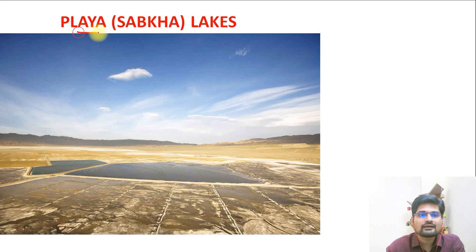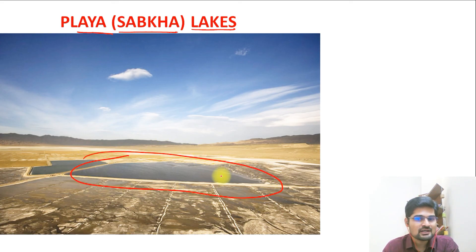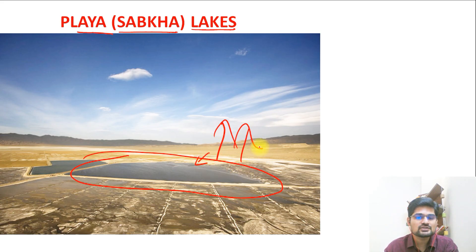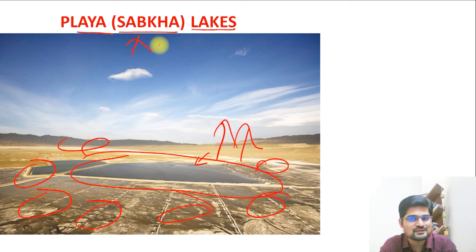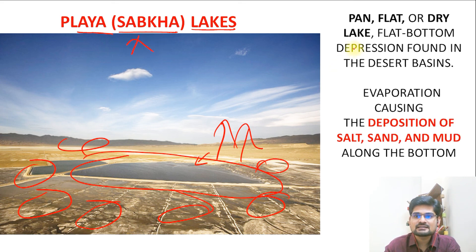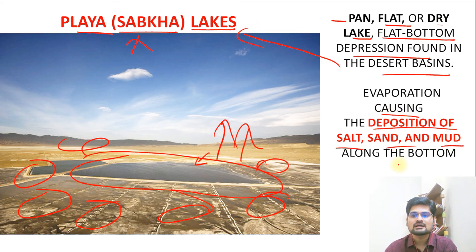Playas, also known as Sabka or desert lakes, are pan-flat or dry lake flat-bottom depressions found in desertic basins. In desertic conditions, water bodies gradually dry up due to excessive evaporation, and salt depositions can be observed around them. Evaporation causes deposition of salt, sand, and mud at the bottom.